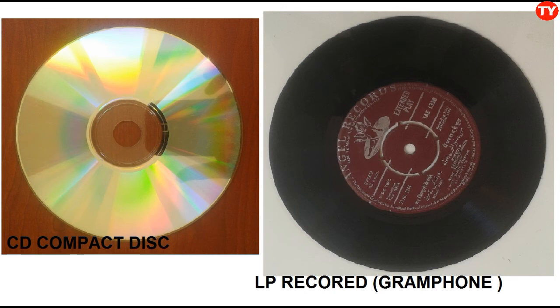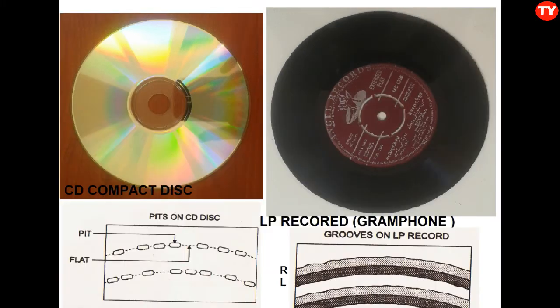There is no hissing sound or background noise in a CD — excellent quality. In an LP gramophone record, we can normally hear noise, and the quality is only normal. In CDs, the left and right channel information is stored separately.